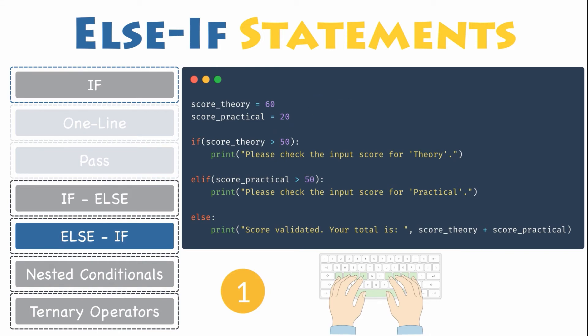Score theory equals 60. Score practical equals 20. You will now check whether the limit for individual scores, which is 50. If score theory greater than 50 print, please check the input score for practical else, print score validated your total is score theory plus score practical.